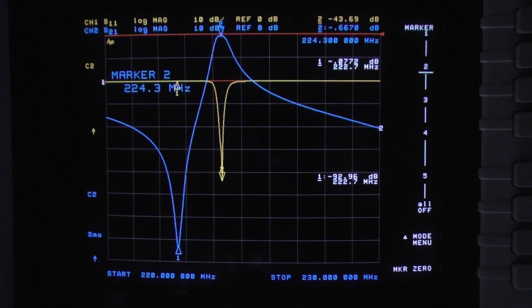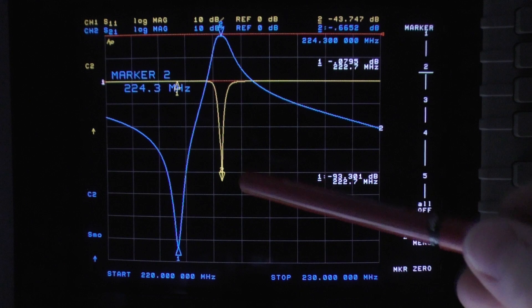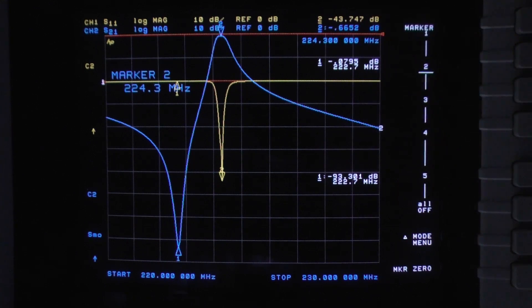You're going to see how that just improved right there. So 90, 92, right here, 93 dB of isolation. Let me get my pen here. There's your return loss. That's your input. So that's negative 43 dB return loss.